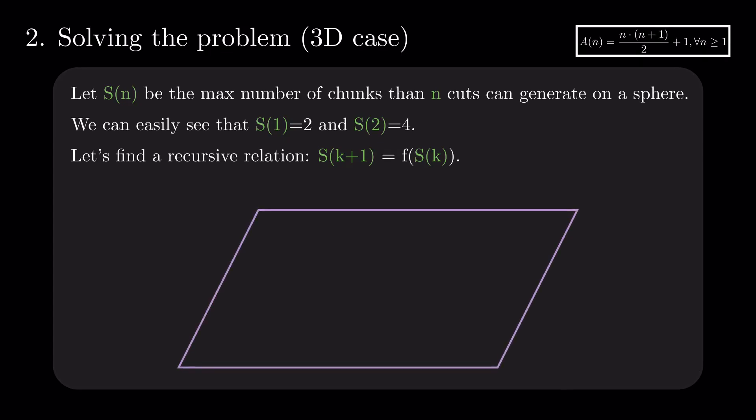Again, we look at the situation when we add a new plane to an existing configuration. The intersection with the sphere is a circle. And the intersections with the previous planes are lines that cut this circle. We know from before that this circle will be split into a maximum of a of k pieces. And, in a similar manner to the 2D case, each piece will split one of the existing chunks in two.